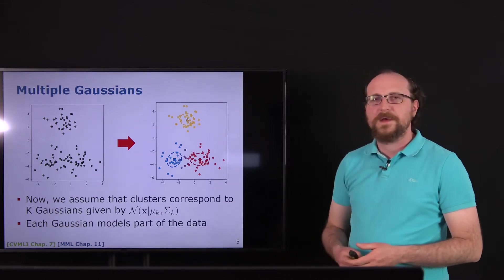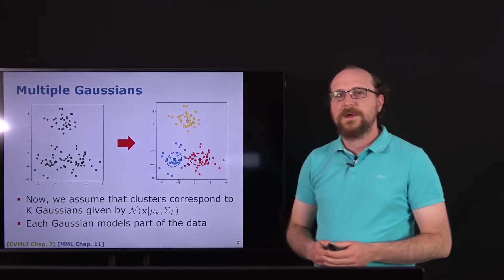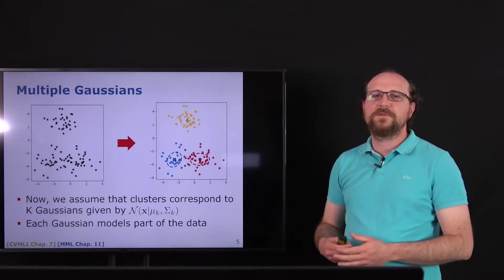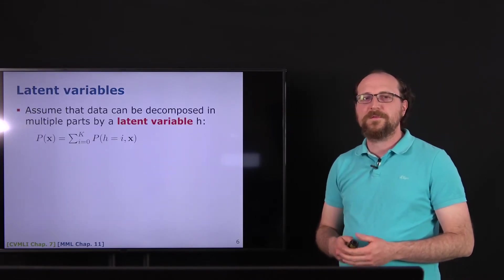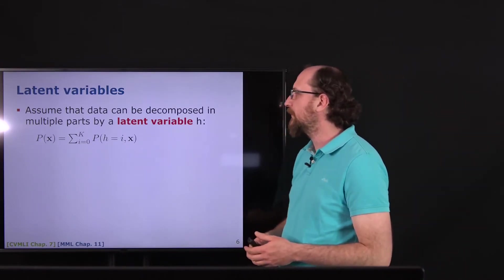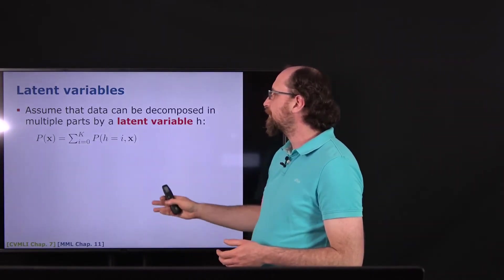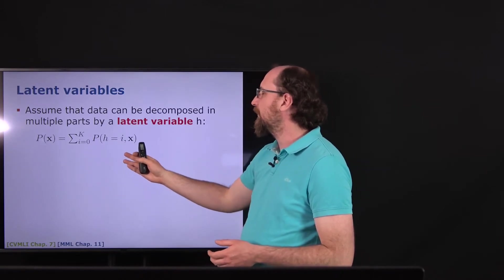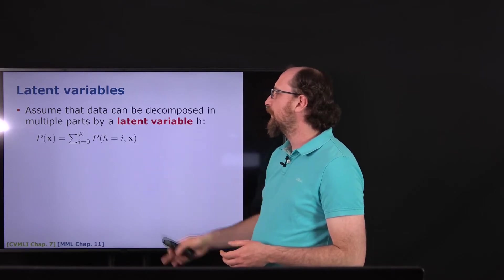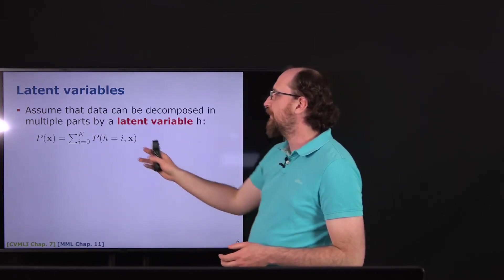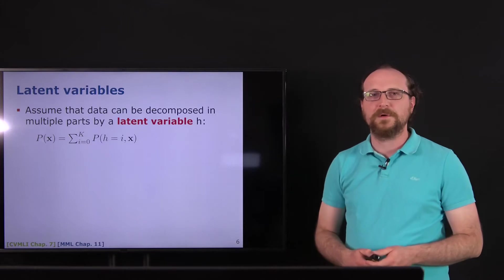We can apply this to our unsupervised data, but to model this we have to introduce something into the model — we cannot just use p(x). This something is called a latent variable. Using the marginalization property, we can write p(x) as the sum over a joint probability involving this hidden variable h and x, summing up multiple joint distributions to get p(x) in the end. This h is called a latent or hidden variable.